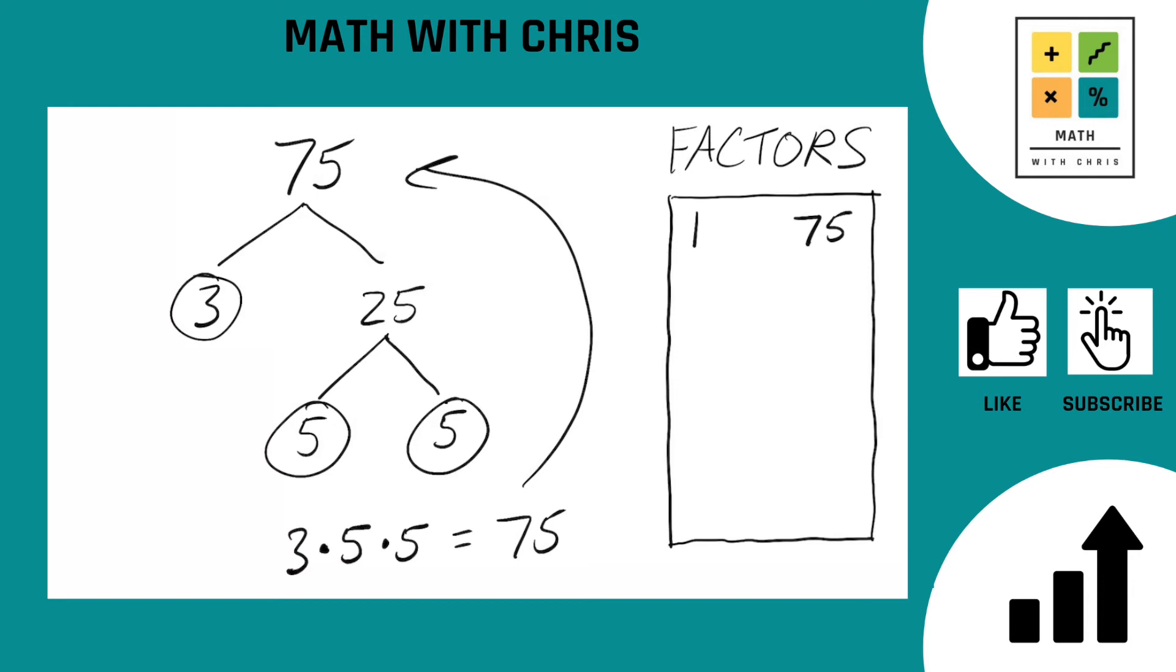So let's bank our prime factors that we found. We found a 3 and we found a 5. And any number we hit along the way also can get banked. There you go. You got a 25. Let's put that guy in there.